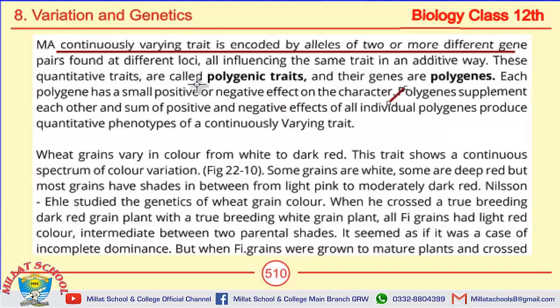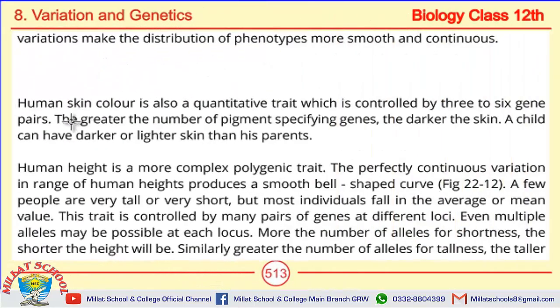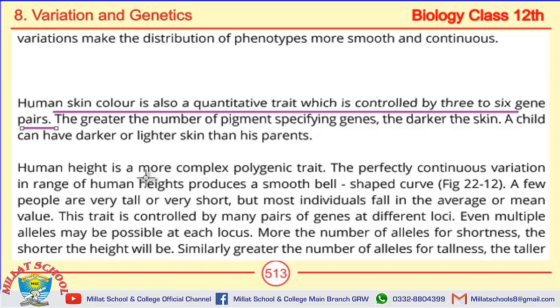For example, wheat grain color varies from white to dark red — one trait controlled by many genes. Human skin color is also a quantitative, continuous trait controlled by 3 to 6 gene pairs. So skin color is a polygenic trait. Human height is an even more complex polygenic trait. These are classic examples of polygenic traits.